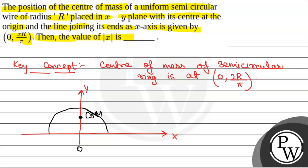This will be COM and this distance from the x axis is 2r by pi. The center of mass of a semicircular ring is at 0, 2r by pi.